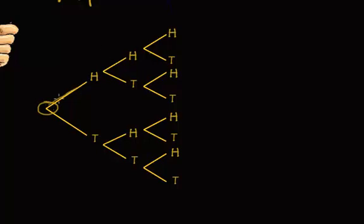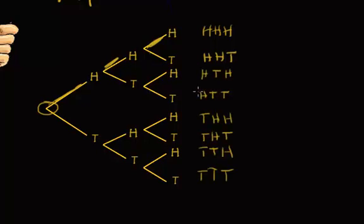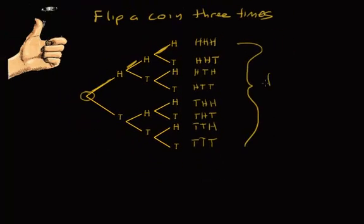If you go up the first branch and then up the first branch again, you get heads, heads, heads. If you go up the first branch, up the second branch for heads, then down tails, you get heads, heads, tails — meaning first coin heads, second coin heads, third coin tails. If you keep this process going, you get a total of eight sample points.